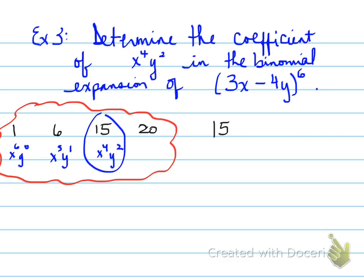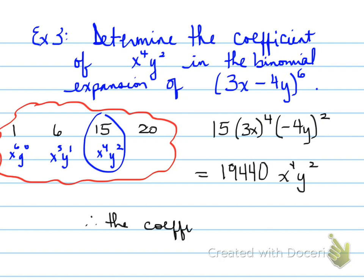The next thing we need to do is take 3x and apply the exponent 4 to that. And negative 4y and apply the exponent 2 to that. The reason why is, don't forget, that 15 is only the number that it gets multiplied by. We have to also include the coefficients of the original terms. So we have to calculate 15 times 3 to the power of 4 times negative 4 all squared. And that will give us something x^4 y^2. And that will be 19,440. So the coefficient is 19,440 for x^4 y squared.